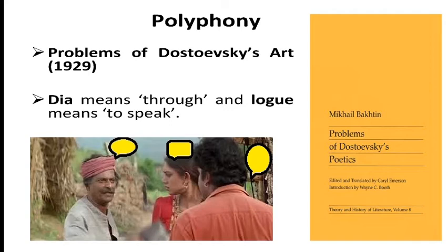When there is a dialogue, we have a give and take process. If someone says something, there is a person who tells it and a person or persons who listens to it. In the novel, the dialogic process would refer to the interaction between the characters.